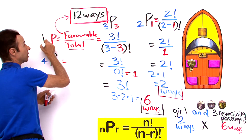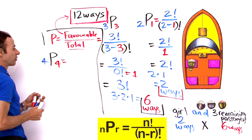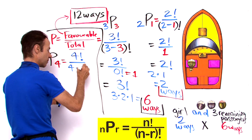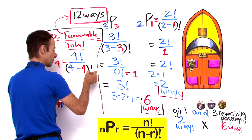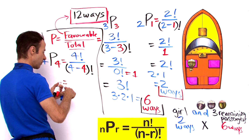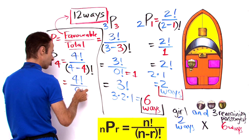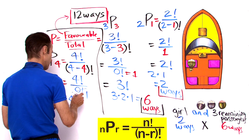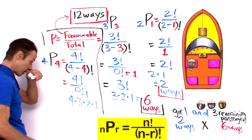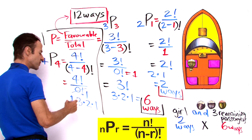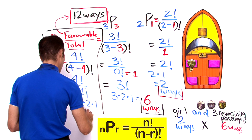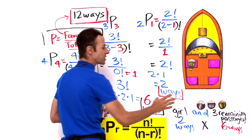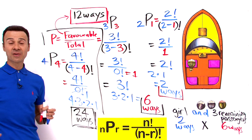The unrestricted case is 4P4, which equals 4 factorial all over (4 minus 4) factorial. That gives 4 factorial over 0 factorial, and 0 factorial is 1, so it becomes 4 factorial. That is 4 times 3 times 2 times 1 equals 24. There are 24 ways in total that 4 passengers can be arranged in 4 seats unrestricted.